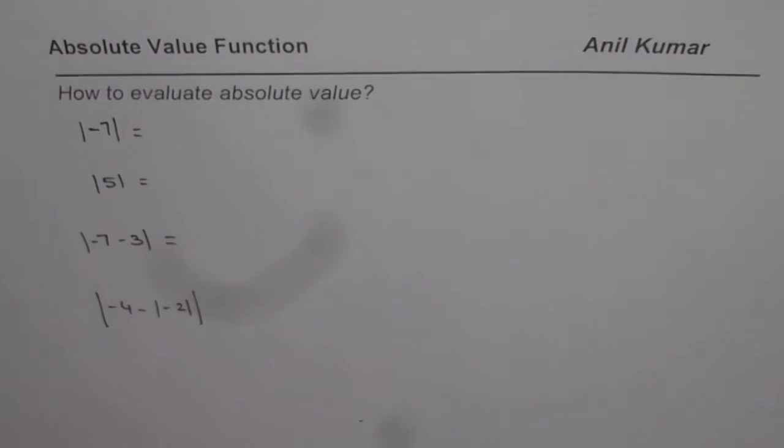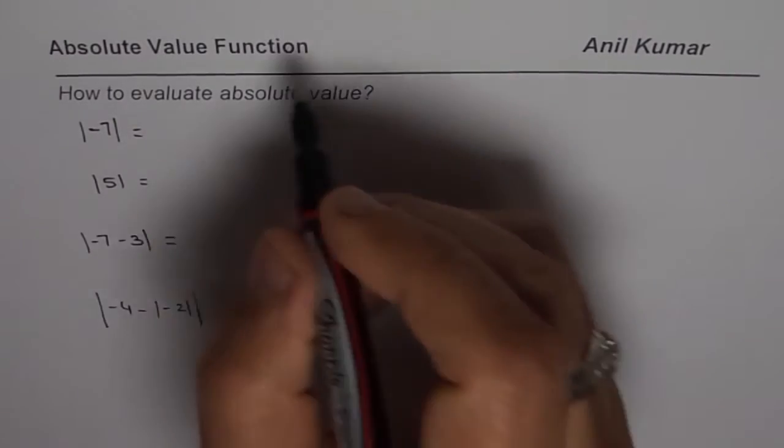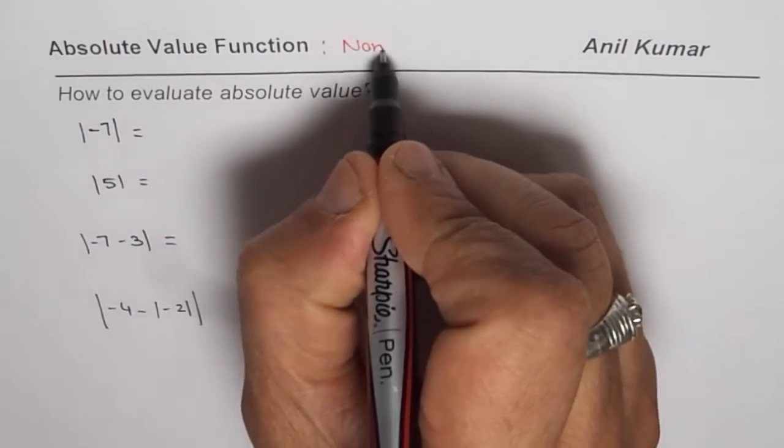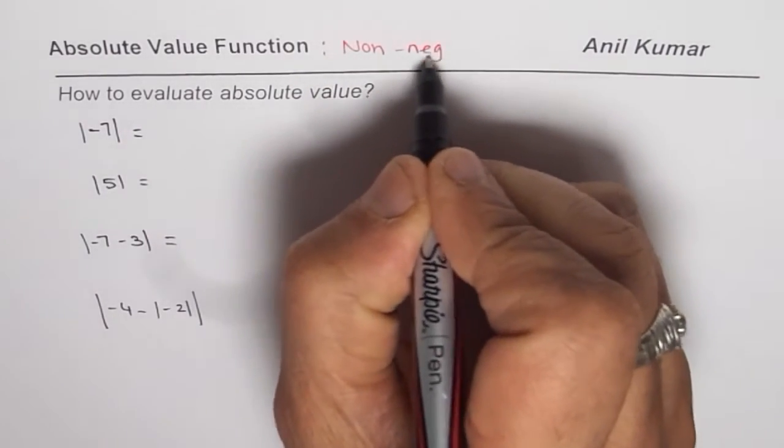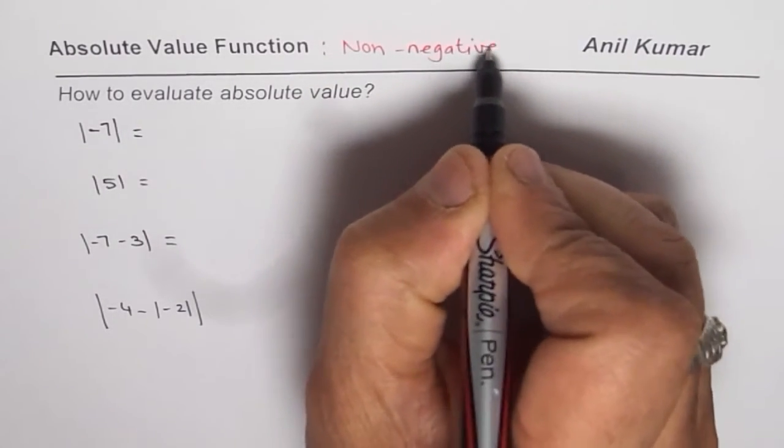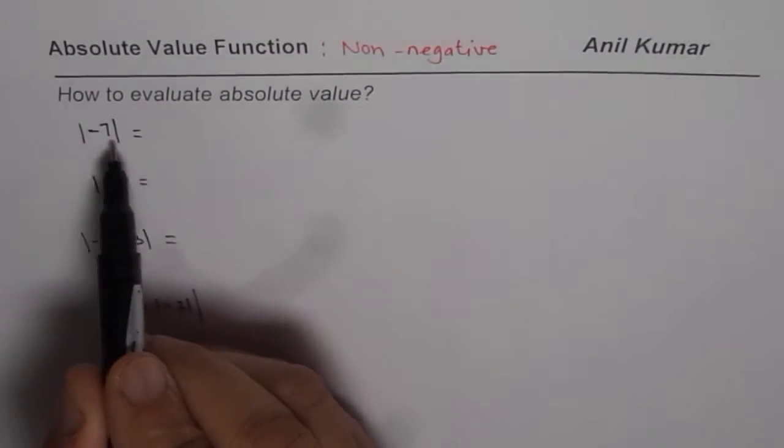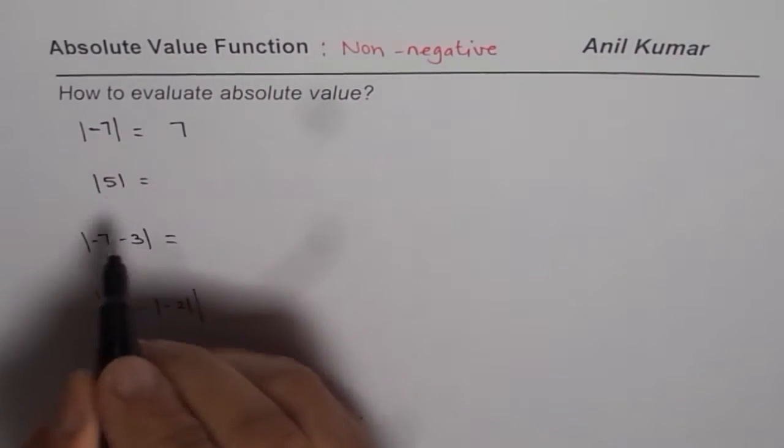Now as you know, absolute value always returns a non-negative number. So absolute value of a function is always non-negative. That is what our answer should be: non-negative.